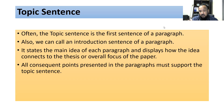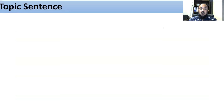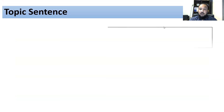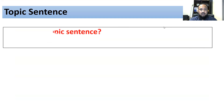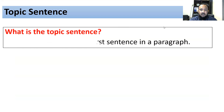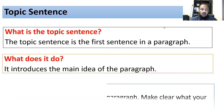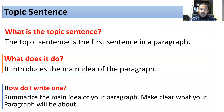In each paragraph there is one idea, and all sentences are going to touch upon that one main point. Now, the topic sentence: What is it? It is the first sentence in the paragraph. What does it do? It introduces the main idea of the paragraph. How do I write one? Summarize the main idea of your paragraph and make clear what your paragraph will be about — just give a brief sketch. This is the topic sentence.